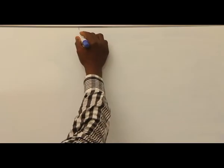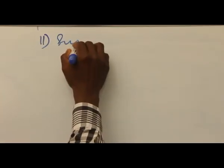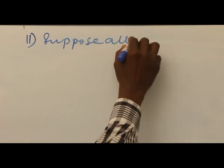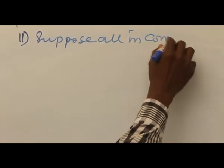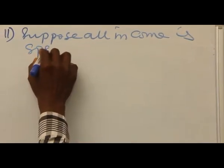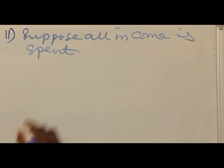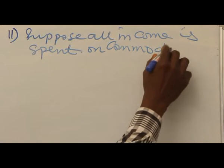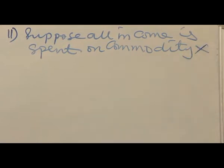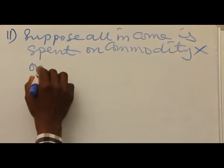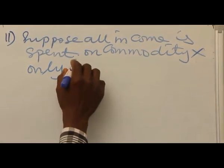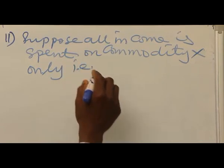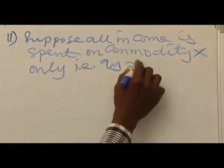The second aspect of the question, Roman numeral 2: suppose all income is spent on commodity X only, i.e., QY equals zero.